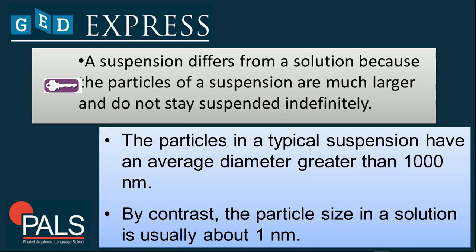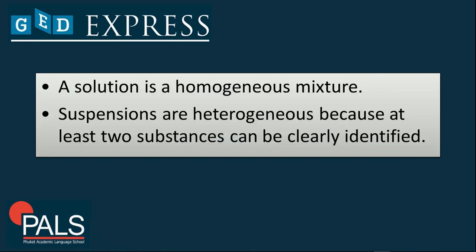Let's define it more. The particles in a typical suspension have an average diameter greater than 1,000 nanometers. By contrast, the particle size in a solution is about 1 nanometer. A solution is considered a homogeneous mixture, and a suspension is known as a heterogeneous mixture because at least two substances can be clearly identified using your naked eye.